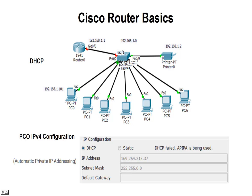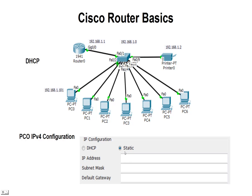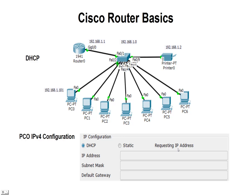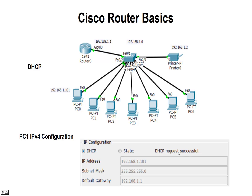Now if we turn on our router, turn the port on, go back to static and then back to DHCP, we'll be requesting an IP address again. This time the PC requests an IP from the DHCP server and the router's DHCP responds. The DHCP request is successful and it assigns an IP address — the first one in the range from 101 all the way to 254, which are the addresses in the pool. It gives it a class C subnet mask of 255.255.255.0, and it also provides the default gateway of 192.168.1.1.